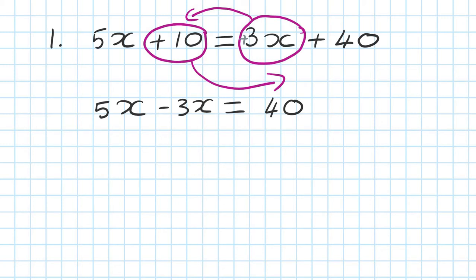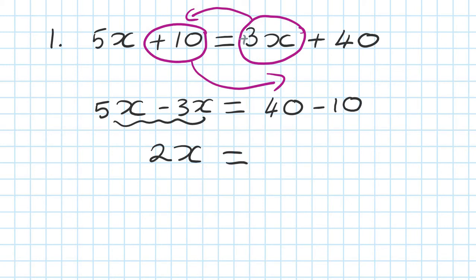Now, positive 10 — you move on this side, on the right, becomes minus 10, so you minus 10. Now we're just collecting like terms. 5x minus 3x is 2x left. And on the right here, 40 minus 3 minus 10 is 30.